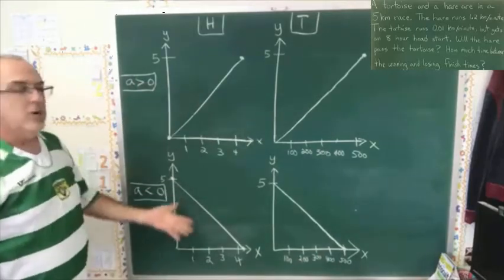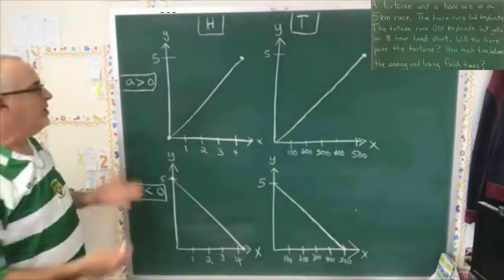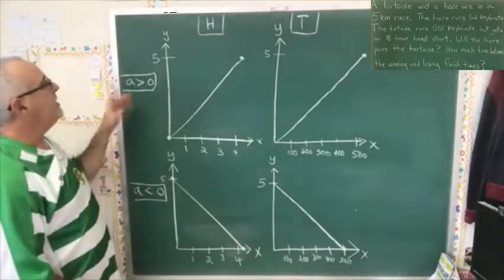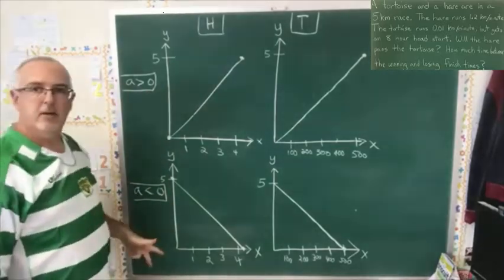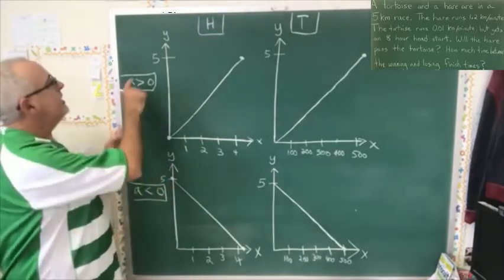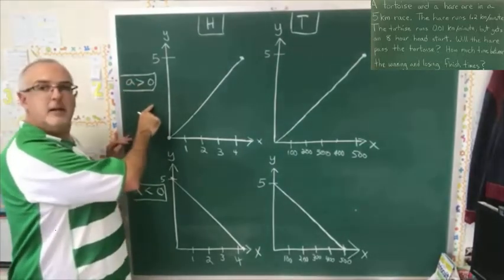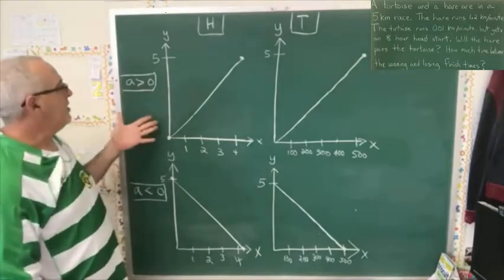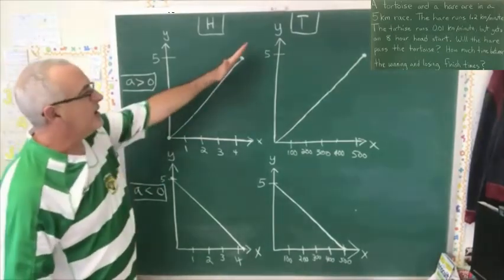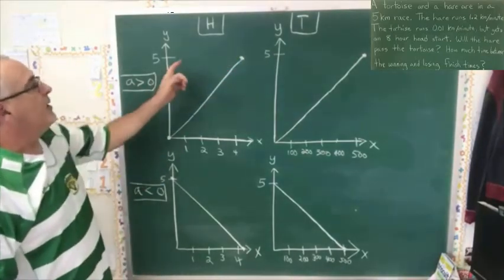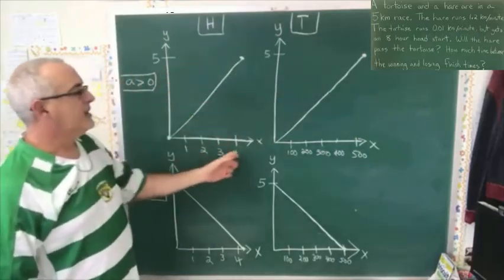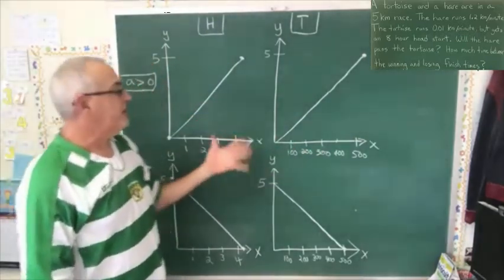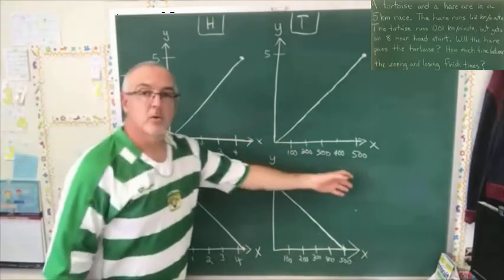What this shows us is that we can visualize this problem in two different ways, depending on how we define our y variable. If it's kilometers covered, that means we will have a positive slope in the straight line equation, and our line will look like this. It looks the same for the hare and the tortoise, but the x-axis has to be scaled differently in order to fit because the numbers are so different.